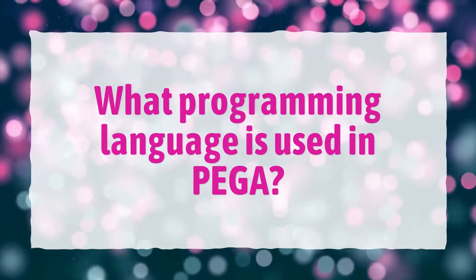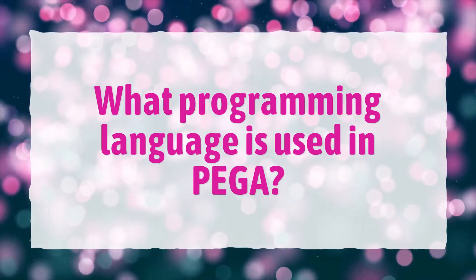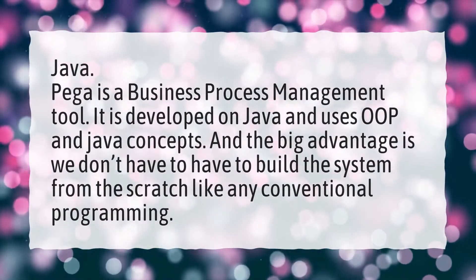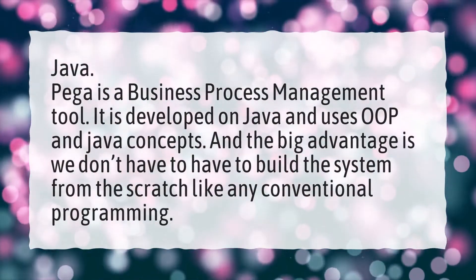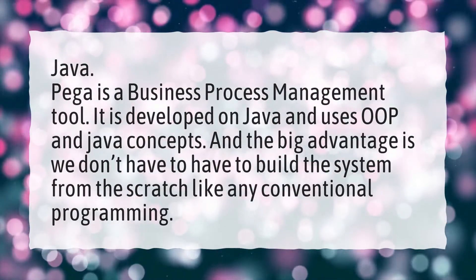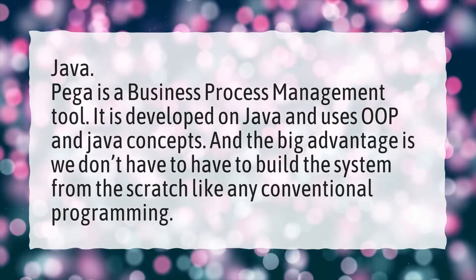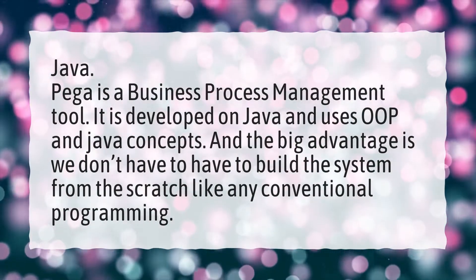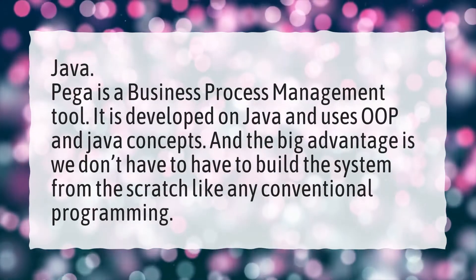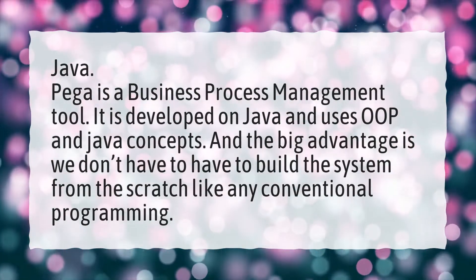What programming language is used in PEGA? Java. PEGA is a business process management tool. It is developed on Java and uses OOP and Java concepts, and the big advantage is we don't have to build the system from scratch like any conventional programming.